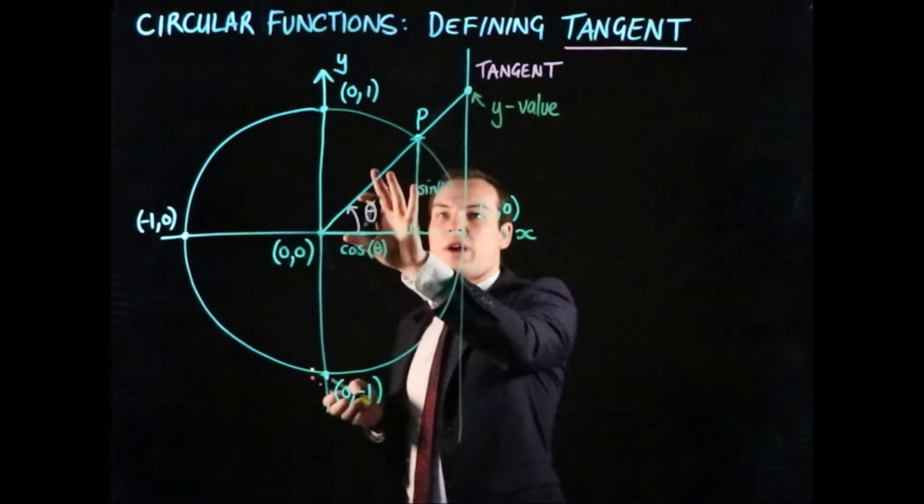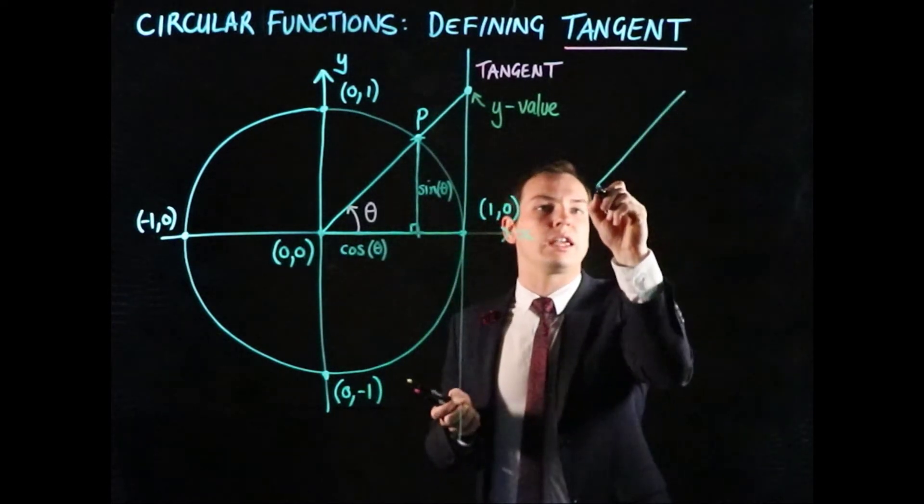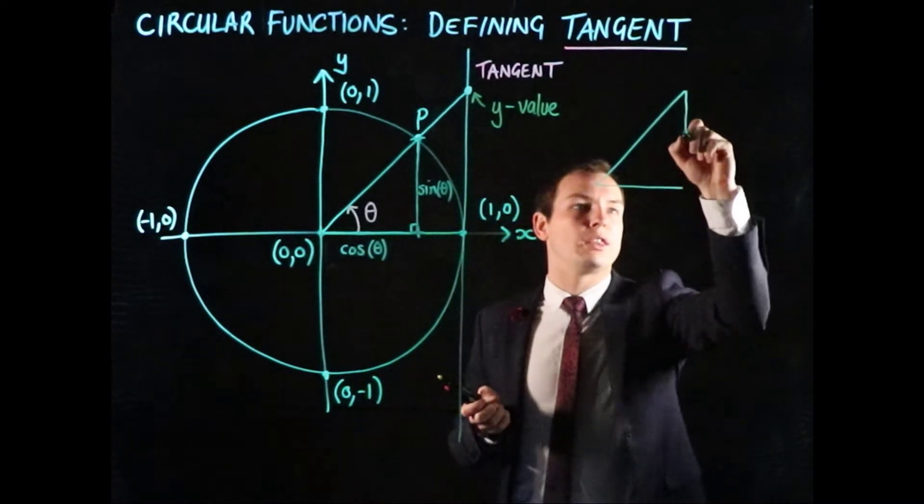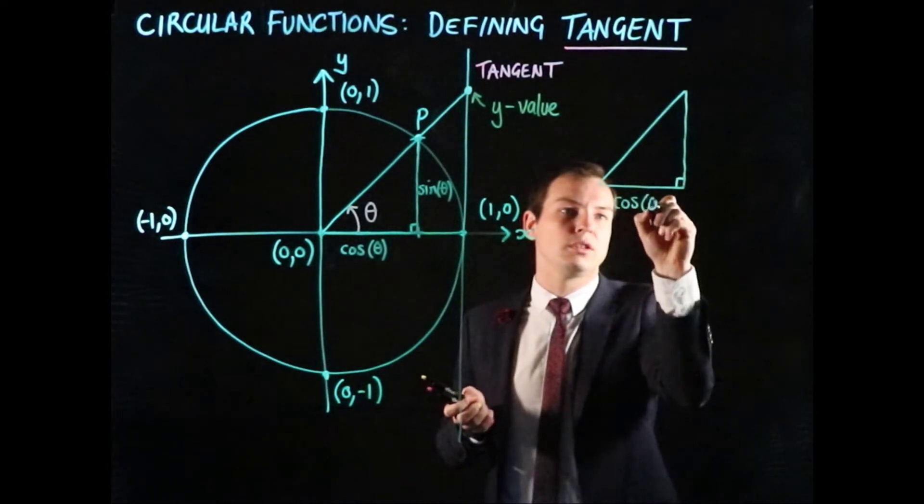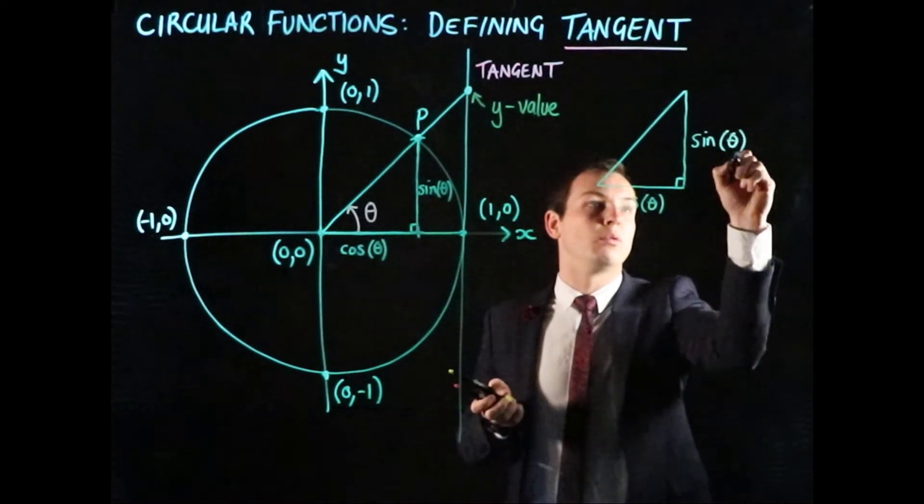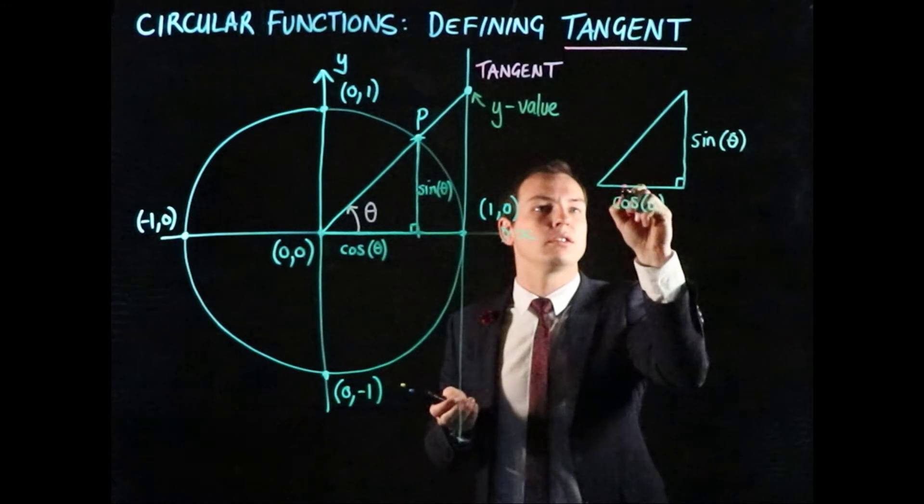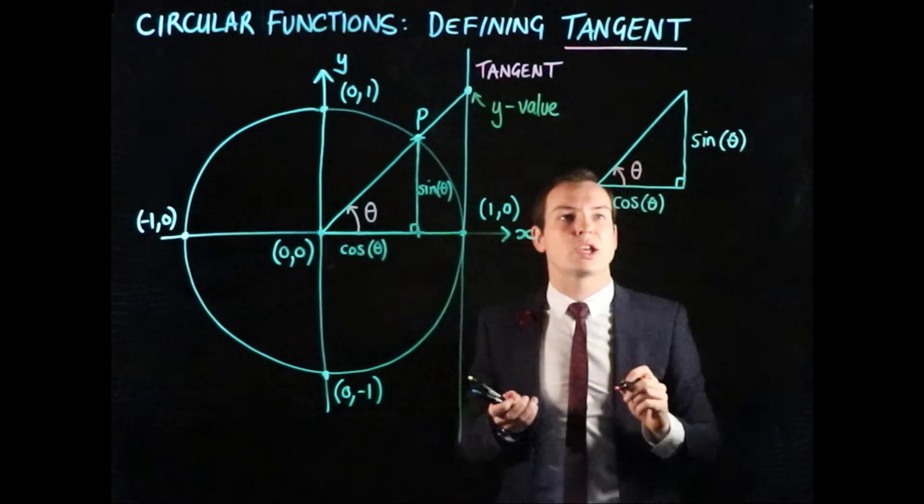If we draw that triangle out over here, we've got the x-length along the bottom and the y-length representing cos(θ) and sin(θ). The angle we're interested in—the one we've been looking at—is right there.